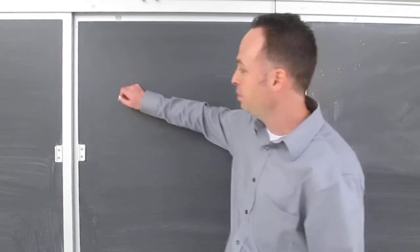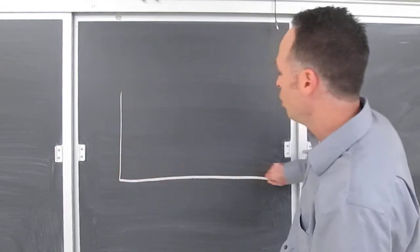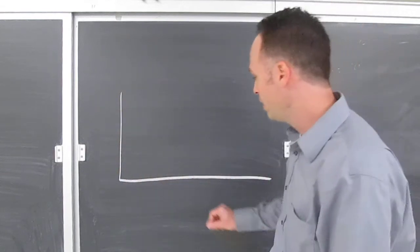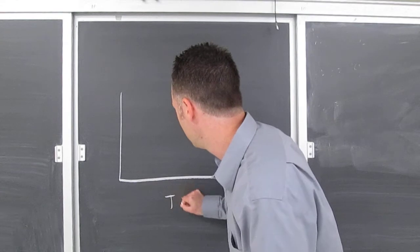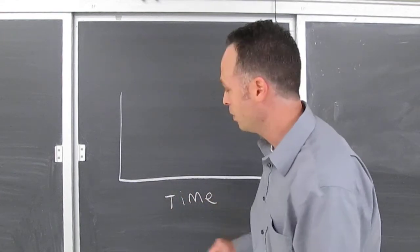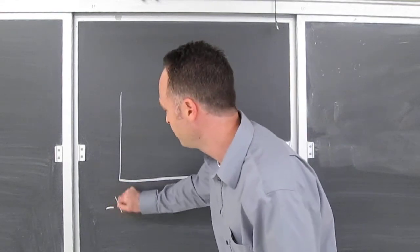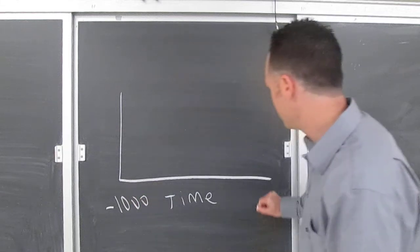And the graph looks something like this. If I plot out temperature over 1,000 years, so right here we have time going from 1,000 years ago to present day.